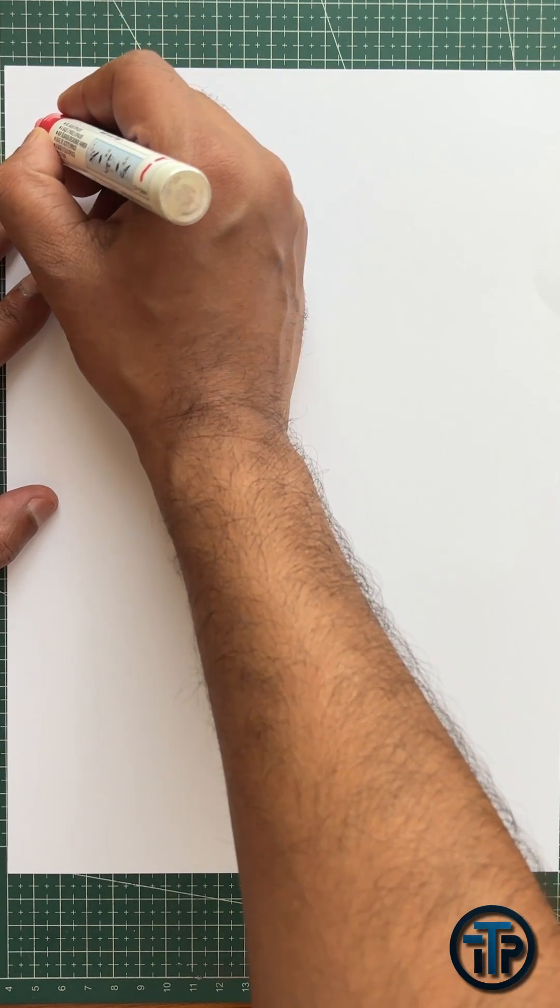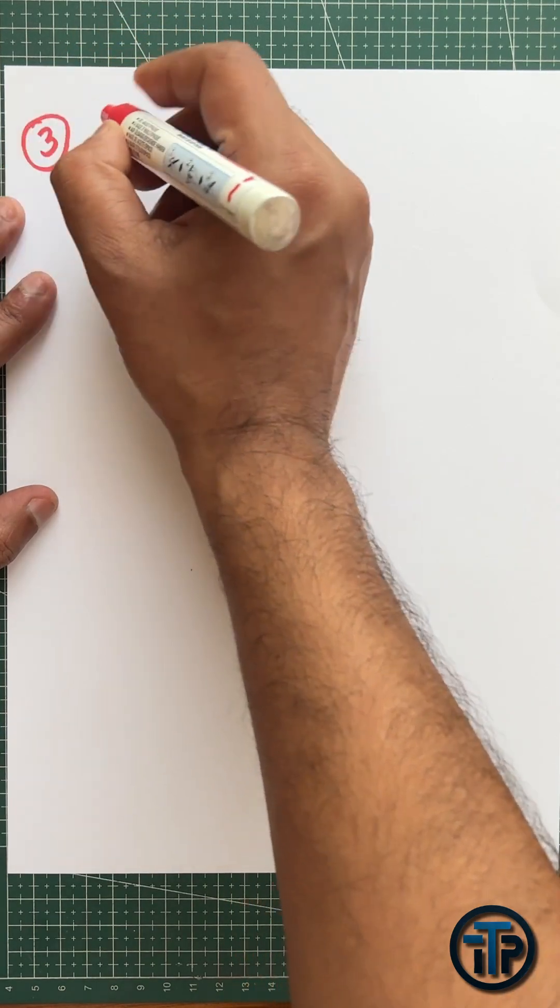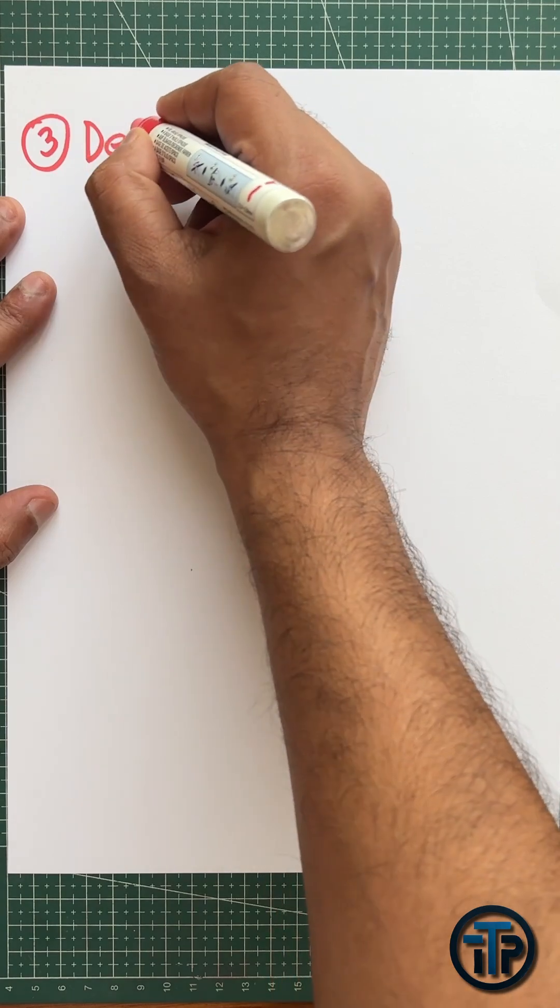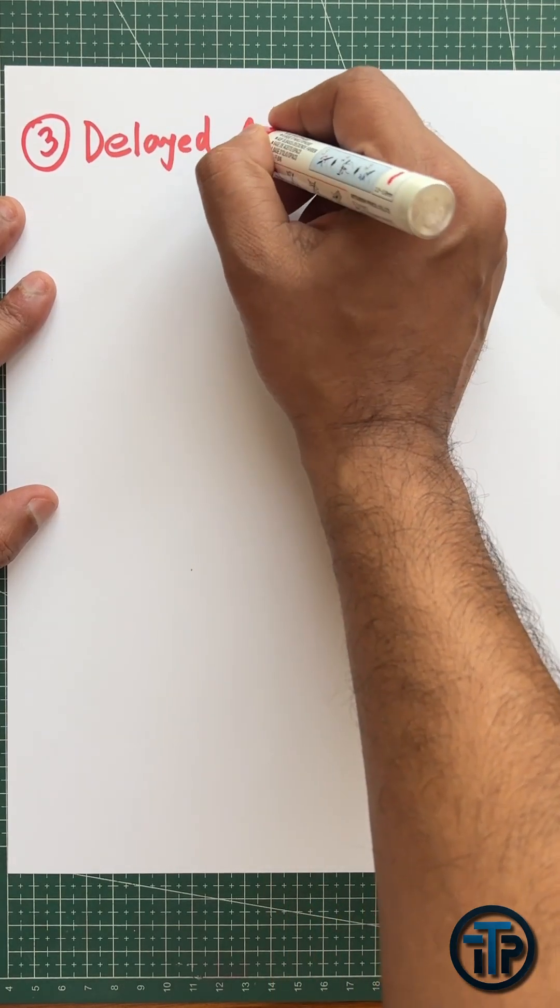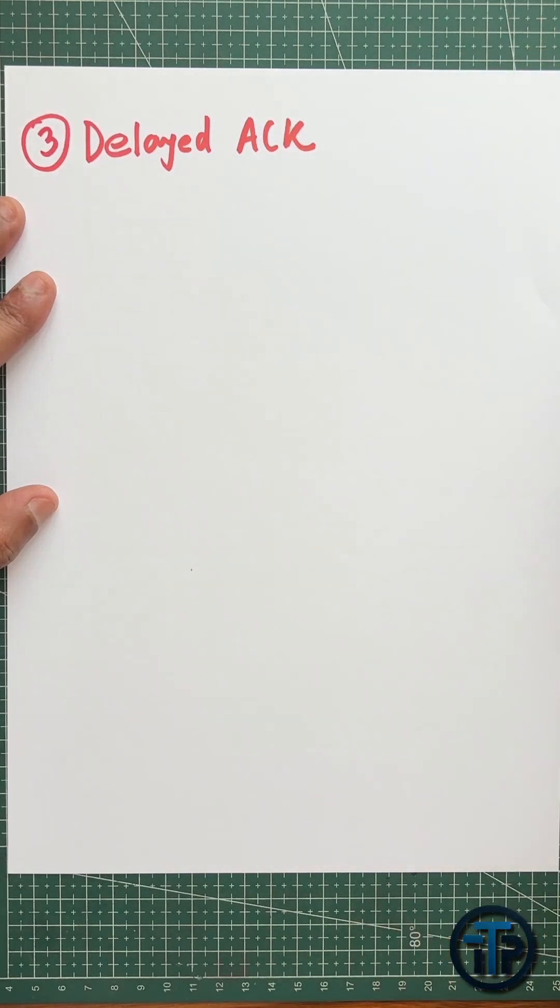Okay, so we'll discuss how the delayed acknowledgement can be handled in stop and wait ARQ. We know that in stop and wait we have to wait for the acknowledgement before we send the next packet. So we'll set some counters.